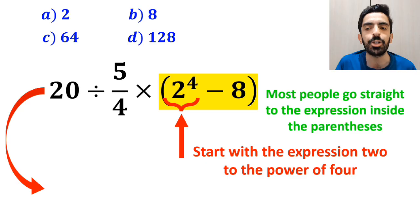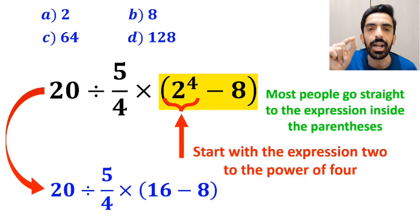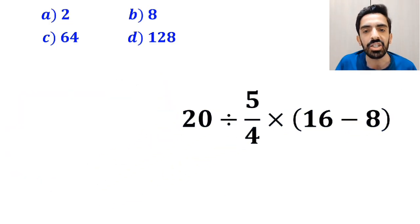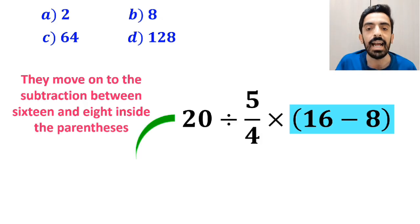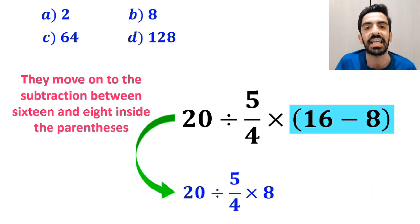So, instead of the original expression, they write 20 divided by 5 over 4 multiplied by 16 minus 8 inside the parenthesis. In the next step, they move into the subtraction between 16 and 8 inside the parenthesis and simplify this expression to 20 divided by 5 over 4 multiplied by 8.